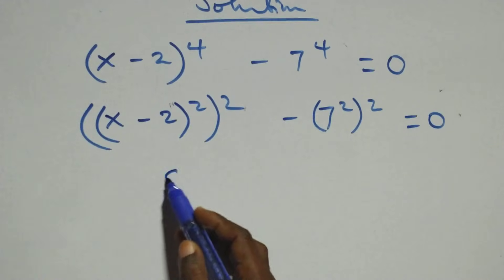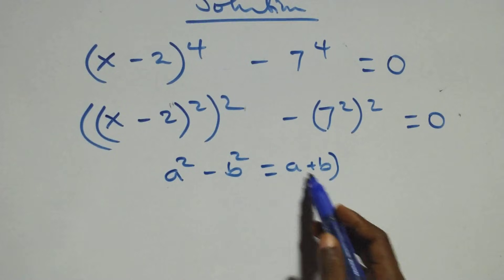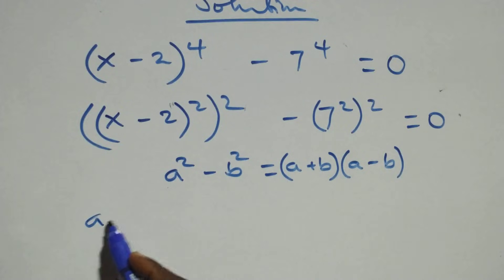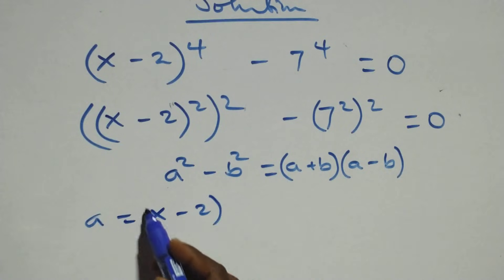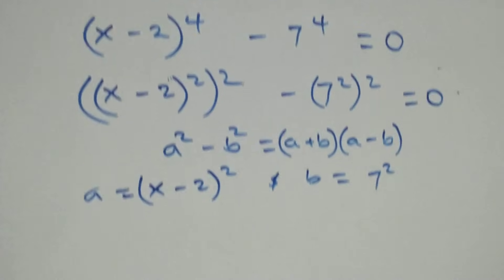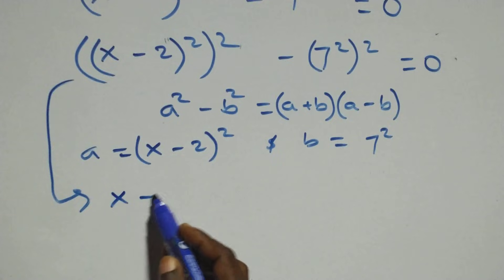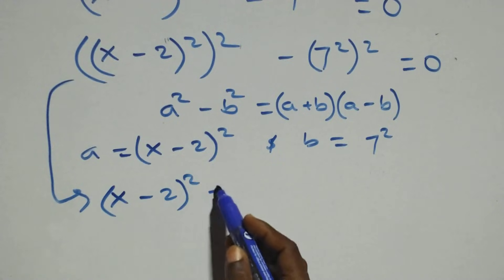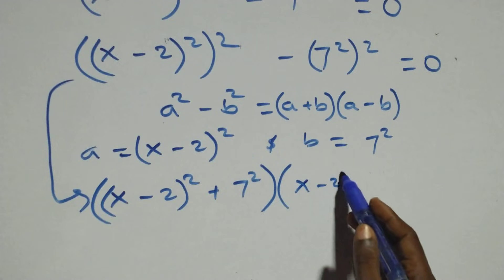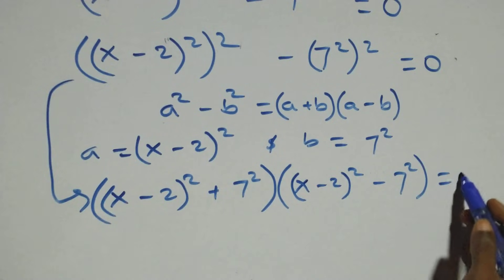This follows the difference of squares identity: a squared minus b squared equals (a plus b)(a minus b). Here, a stands for (x minus 2) squared and b stands for 7 squared. Applying this, we get [(x minus 2)² + 7²] times [(x minus 2)² minus 7²] equals zero.